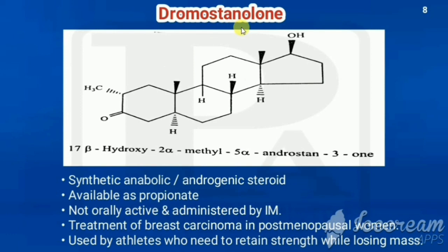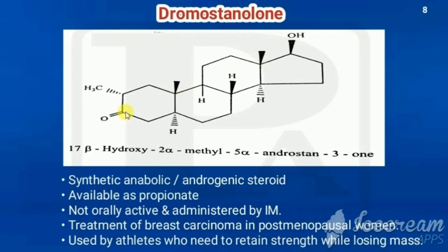Next is dromostanolone. Looking at its structure, we can identify it as a steroid. For any steroid, four points must be remembered: first, the basic ring is cyclopentanoperhydrophenanthrene; second, it has two angular methyl groups; third, it can have an oxygen-containing functional group at the third position; and fourth, at the 17th position it may or may not have a side chain.